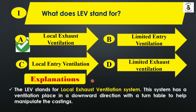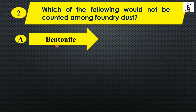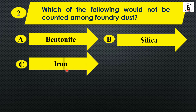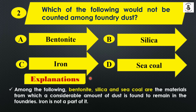Question two: Which of the following would not be counted among foundry dust? Option A: Bentonite, Option B: Silica, Option C: Iron, Option D: Sea coal. Bentonite, silica, and sea coal are materials from which considerable dust is found in foundries. Iron is not part of foundry dust, so the right answer is Option C: Iron.